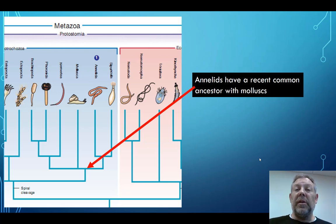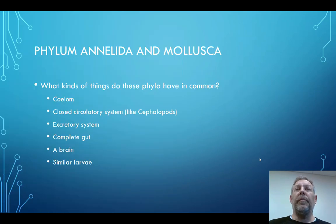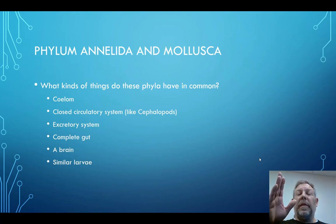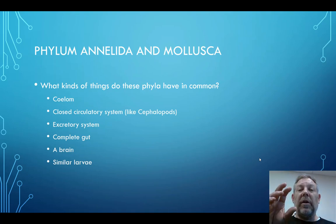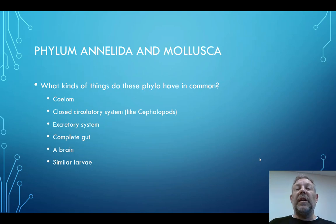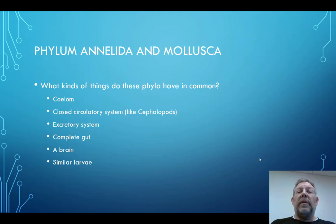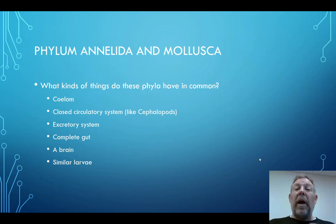But the data suggests they do have a recent common ancestor. For each of these phyla, we want to think about the differences from the previous phyla — how these characteristics evolved over time to make each group unique. Last week, we first started to see a coelomic cavity in the freshwater mussel we dissected, but it wasn't well developed. It's more developed in the earthworms and other annelids. The annelids have a closed circulatory system; some molluscs had an open circulatory system, but the more active cephalopods had a closed one, and now we see it in all members of this group.